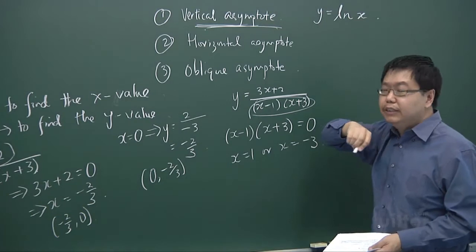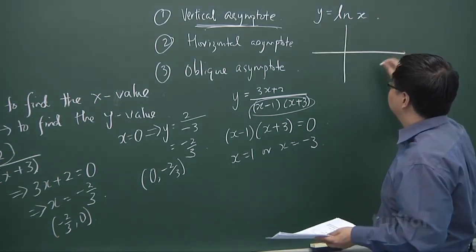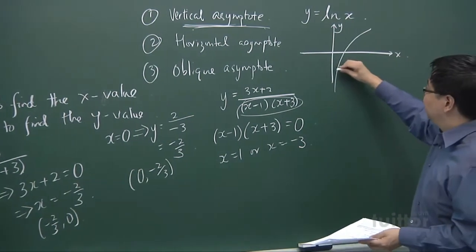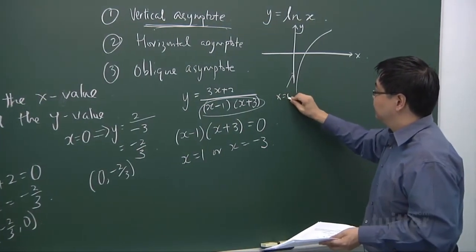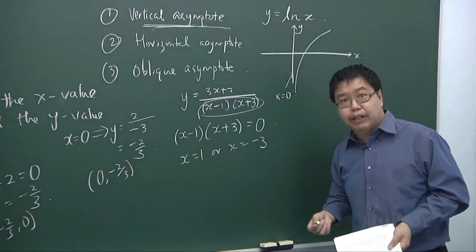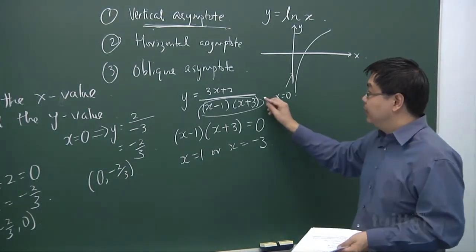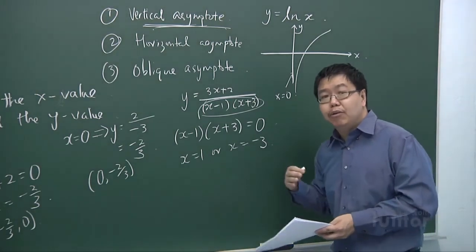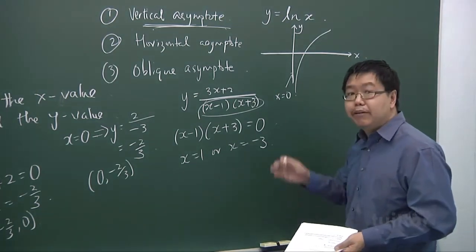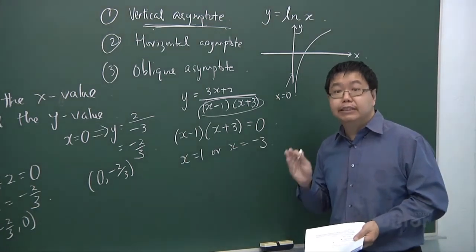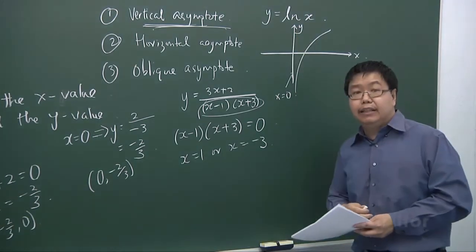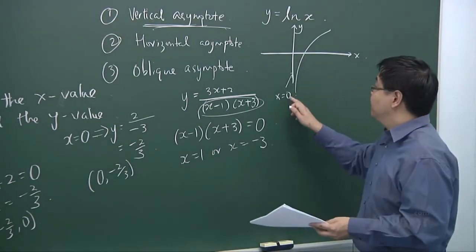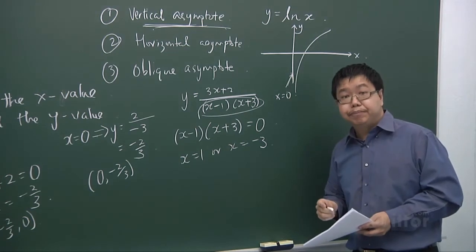However, not all vertical asymptotes are found by setting the denominator equal to zero. One such example is the log function. If you sketch the log curve using a graphing calculator, you'll see it has a vertical asymptote at x equals zero. But besides such special graphs, in general, vertical asymptotes are obtained by making the denominator equal to zero. On your sketch, a vertical asymptote is represented by a vertical dotted line, with the exception that if the asymptote happens to be the y-axis, you cannot draw the dotted line — you indicate it as x equals zero.